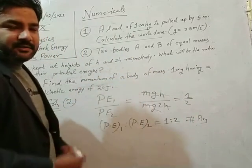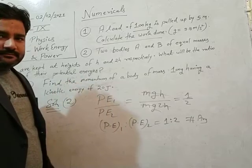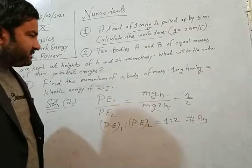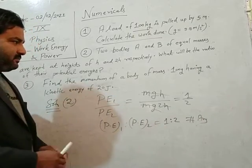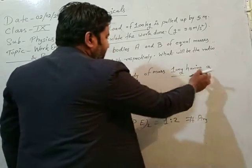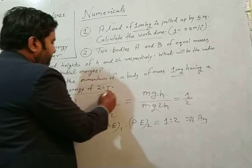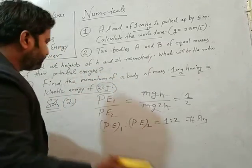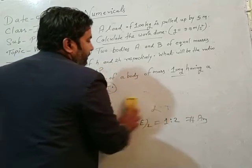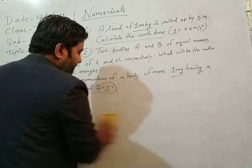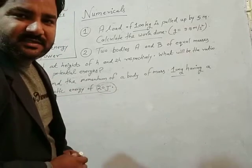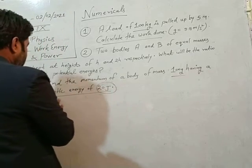The last one: find the momentum of a body of mass 100 gram, having a kinetic energy of 20 joule. Kinetic energy is 20 joules, so K equal to 20, and mass is 100 grams. I will remember mass here in SI system, so you have to change this mass in SI system.